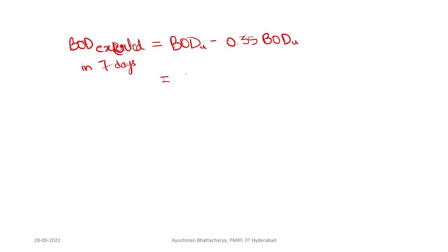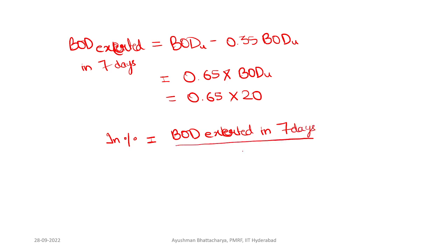Since BOD ultimate is 20 mg/L, this becomes 0.65 × 20. To express in percentage, we write: BOD exerted in 7 days divided by BOD ultimate × 100.